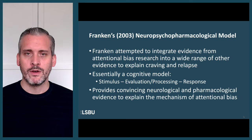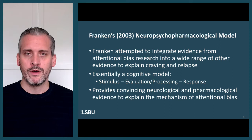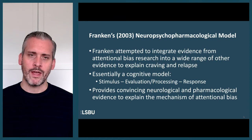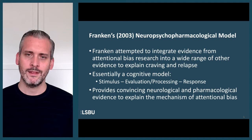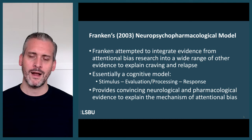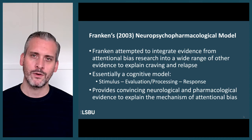Franken's neuropsychopharmacological model neatly brings together a lot of what we've been discussing. Franken was attempting to integrate evidence from attentional bias research into a more holistic model to understand craving and the process of relapse. It's described as a neuropsychopharmacological model because the paper goes into considerable detail about the neuropsychopharmacological underpinnings, but it's fundamentally a cognitive model trying to explain how all these different cognitive processes link together.